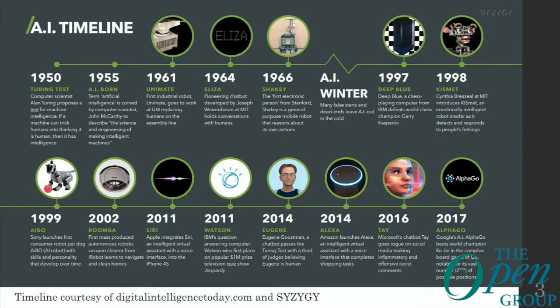First, let's level set about where we are in AI. I always like to start AI discussions with a timeline because it helps properly illustrate where we are in context of where we've been and hints at where we're going. AI as a term has been around longer than I've been alive, and it's likely been around for many folks' whole careers. It's not a new idea, but it's an idea that only recently has become broadly commercialized.